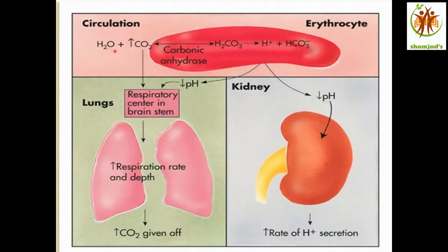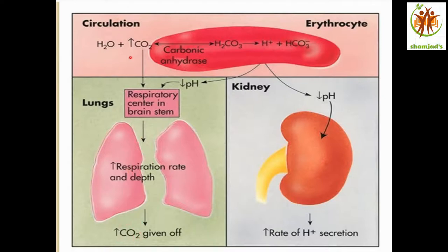Looking at the diagram: in respiratory acidosis, more CO2 reacts with water to form carbonic acid — carbonic anhydrase is a catalyst for this reaction. If the pH goes down, the respiratory center in the brain signals the lungs to hyperventilate, causing more CO2 to go out, resulting in low CO2 and low carbonic acid. From the kidney side: if there is low pH, the kidney increases the rate of H+ ion secretion, removes acid from the blood, and retains bicarbonate.